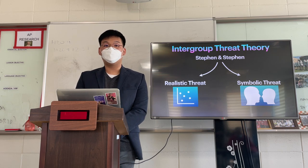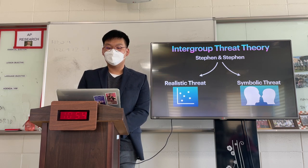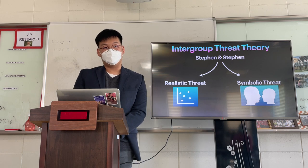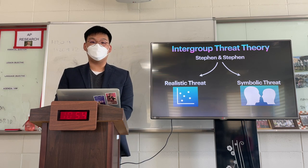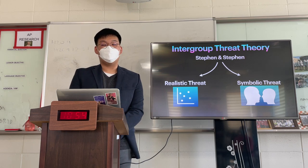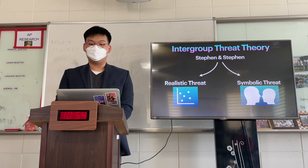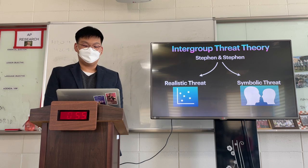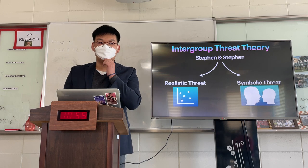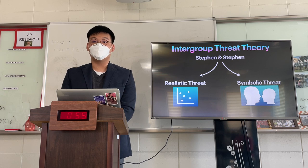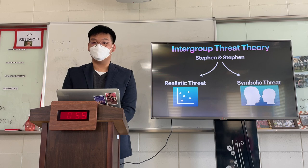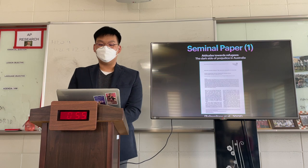The theory is titled Intergroup Threat Theory, developed by Stephan and Stephan from the late 1990s and continuously modified until the early 2000s. Initially it had four parts, but later research showed the two-part components can still represent the entire prejudicial attitude. The first component is called realistic threat, which refers to tangible threats such as economic threats. Symbolic threats refer to more intangible threats relating to culture, language, or tradition.